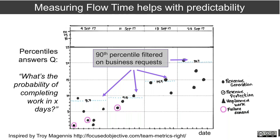If you use the 50th percentile — just the average — your estimates will be wrong at least half the time. There's a book called 'The Flaw of Averages' whose opening cartoon shows a six-foot-tall statistician drowning in a lake with an average depth of three feet. Be careful about using averages to estimate your work. Try to filter your data and calculate the 75th, 80th, or 90th percentile if you need a high confidence level — this will help you be more predictable.